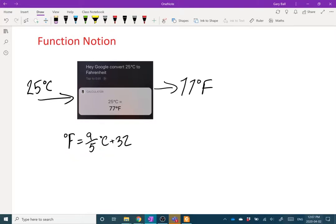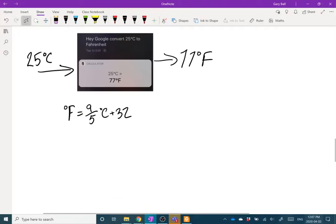A function may not, on the surface, look really any different than an equation like this. It's just set up a little bit differently. So if I write the same thing in function notation, I would write f of c equals 9 fifths c plus 32.